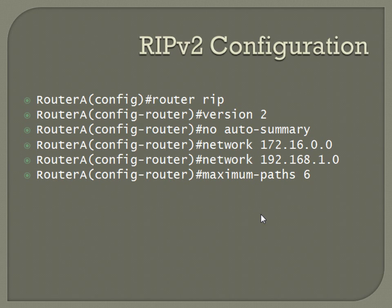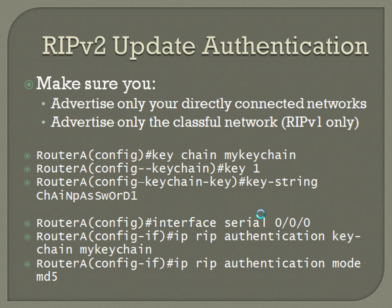To set the root version and update authentication for password protection, first make sure you advertise only directly connected networks. On router A, you can set up authentication a couple of different ways. A keychain allows you to set up a number of passwords so you can cycle through them instead of having to constantly manually update lots of passwords on different routers.